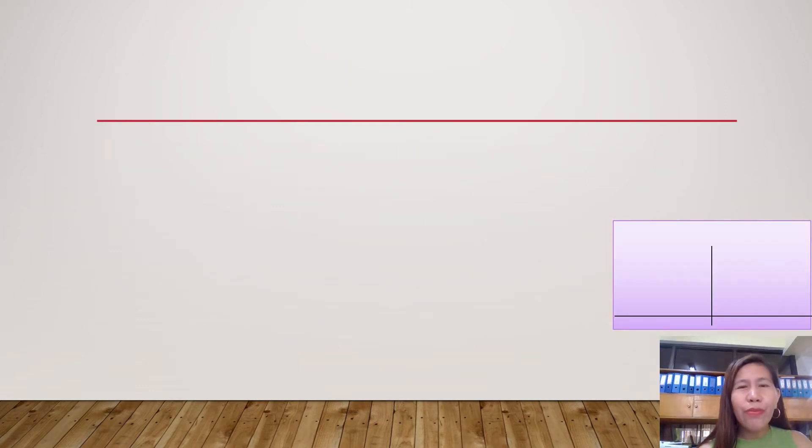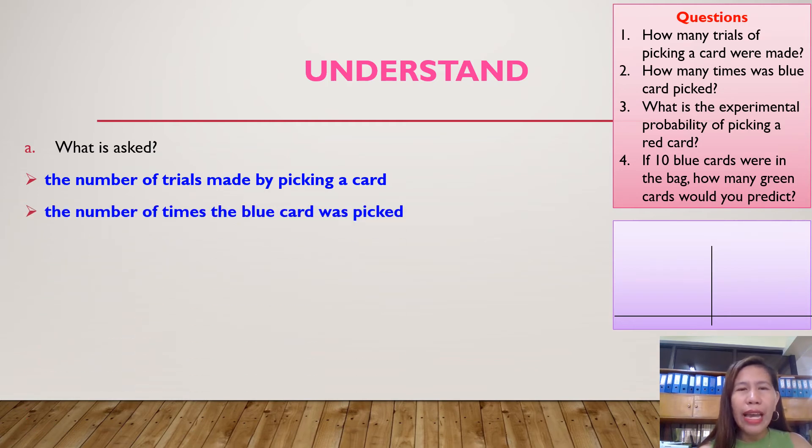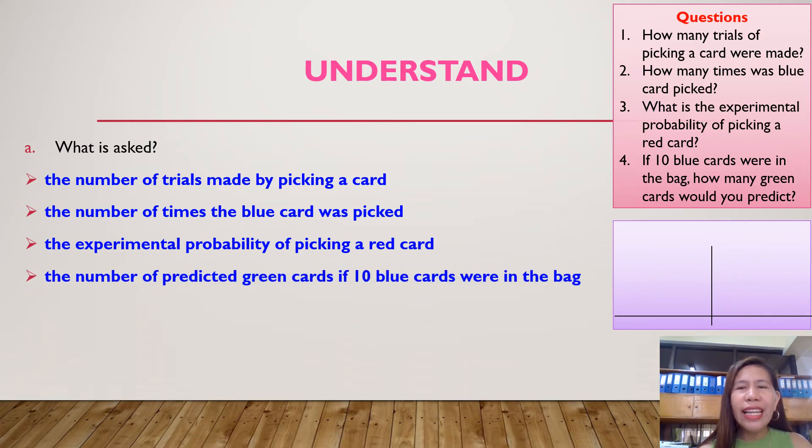To solve routine and non-routine problem, we should follow some steps in solving the problem. The first step is understand. We should know what is asked in the problem. For today's problem, we have four questions. The first one is the number of trials made by picking a card. The second one is the number of times the blue card was picked. The third one is the experimental probability of picking a red card. And the last one is the number of predicted green cards if 10 blue cards were in the bag. Then after that, after we know what is asked in the problem, then it is the time that we are going to know what are the given facts in the problem.